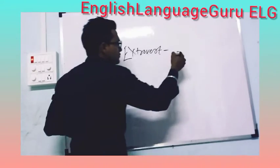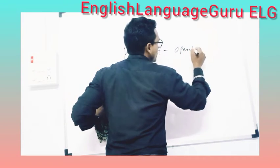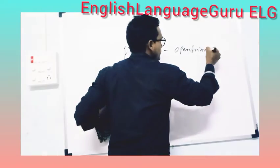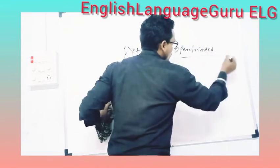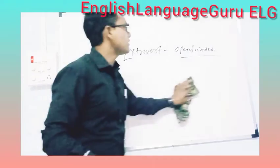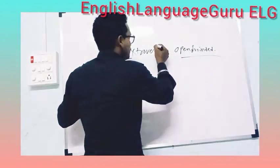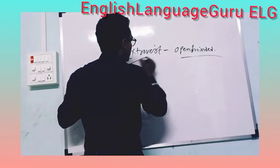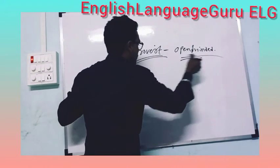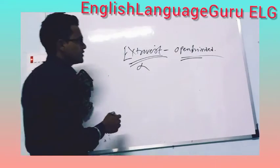You might get a little barrier while learning the next word. 'Extrovert' means an open-minded personality. Many times in our friendships we say 'he's a very open-minded person' — instead of that, we can use the word 'extrovert.' Here is an example sentence for it.